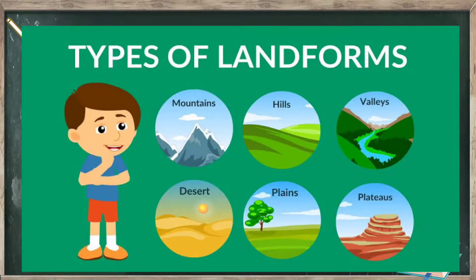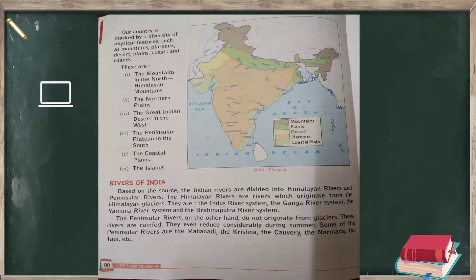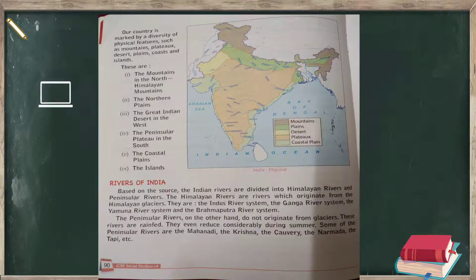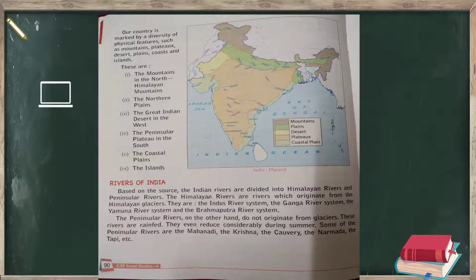Our country is marked by the diversity of physical features such as mountains, plateaus, deserts, plains, coast, and islands. These include: the Himalayan mountains in the north, the northern plains, the great Indian desert in the west, the peninsular plateau in the south, and the coastal plains and islands.